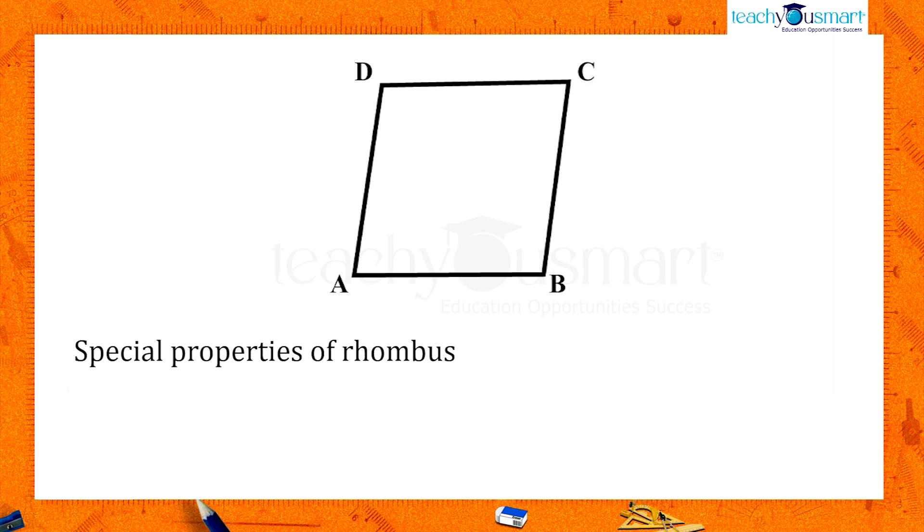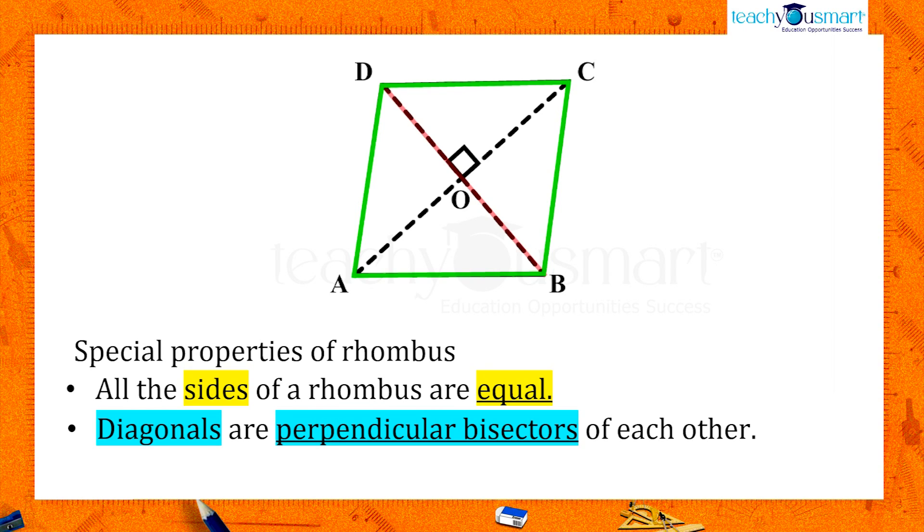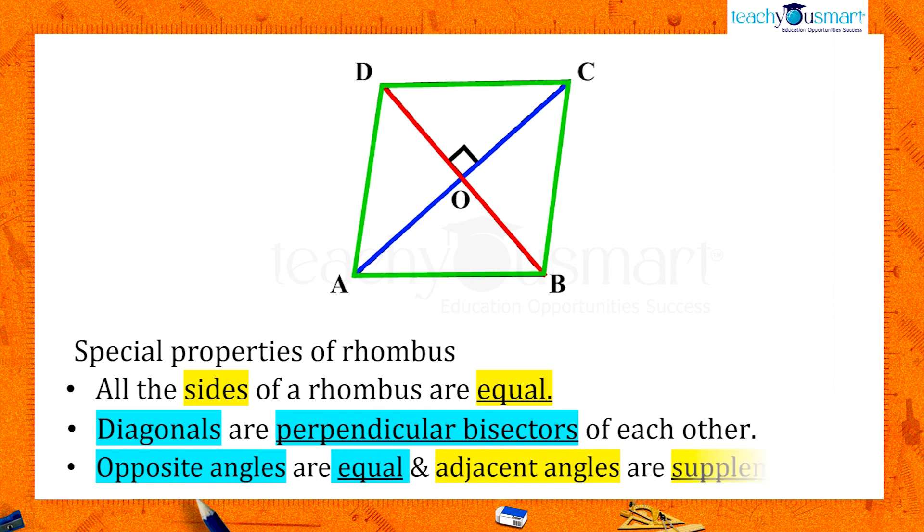We know that all the sides of rhombus are equal and the diagonals are perpendicular bisectors of each other. Opposite angles are equal and adjacent angles are supplementary.